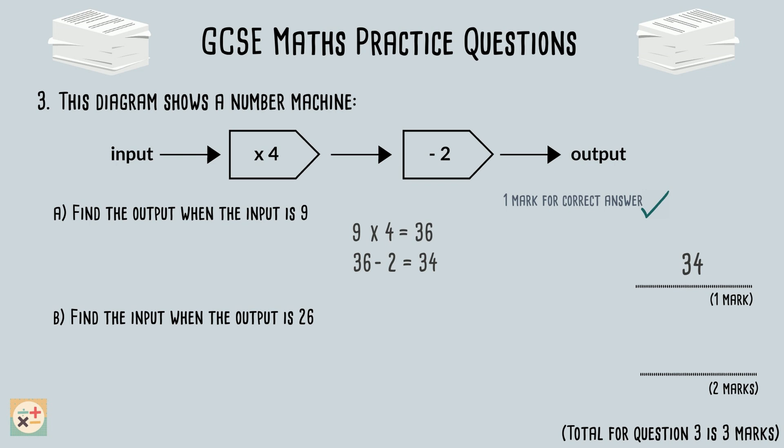Part B of the question is slightly trickier. We are given the output and are asked to find the input. We can use algebra to answer this question. Let's use the letter Y to represent the input, and write out the operations from the number machine in an equation. So, we would multiply Y by 4, and then subtract 2, which would equal 26. To find out what Y equals, we can rearrange the equation and then solve. For a refresher on rearranging equations, see our video linked above.